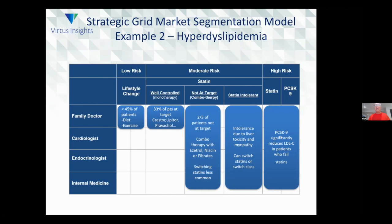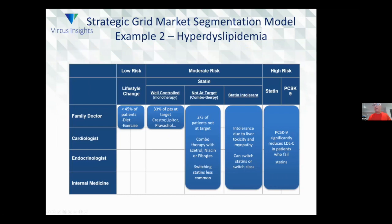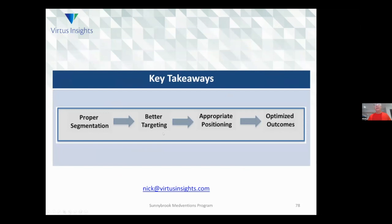When you finish this exercise, it doesn't always have to be presented the same way — you can spin it differently in a pitch presentation. One company developing a contact lens to measure glucose and other biomarkers did this exercise and spun out a table showing market type, segments, number of patients, and a pie chart showing the proportion of each segment. They received excellent feedback for their insights on their market. Segmentation ensures that you target better, making for better positioning and optimized outcomes.